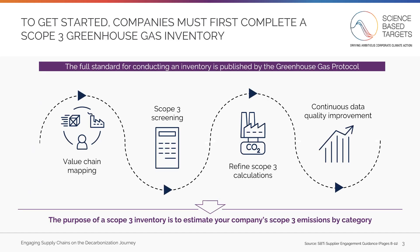Before setting a Scope 3 emissions reduction target, you must first complete a full Scope 3 greenhouse gas inventory. The full standard for conducting an inventory is published by the Greenhouse Gas Protocol and is linked in the description below. The purpose of a Scope 3 inventory is to estimate your company's Scope 3 emissions by category. The four-step process shown on this page summarizes how to calculate Scope 3 emissions according to the Greenhouse Gas Protocol.